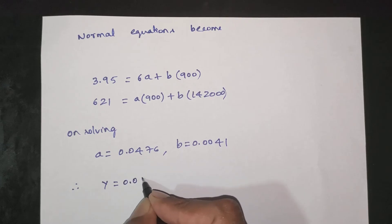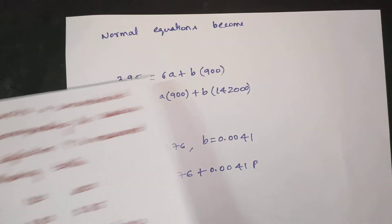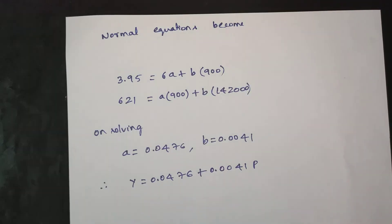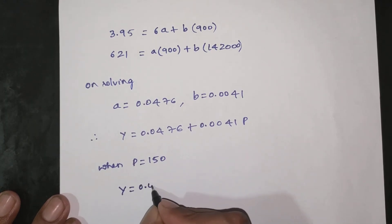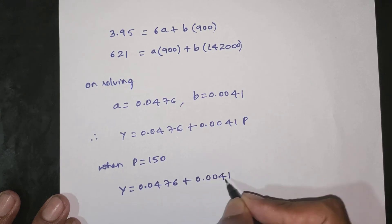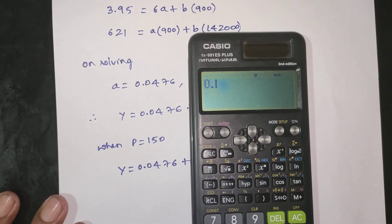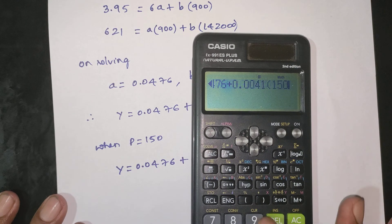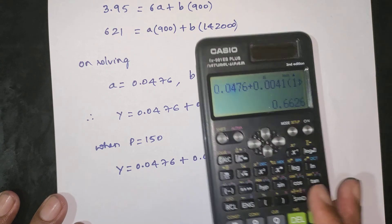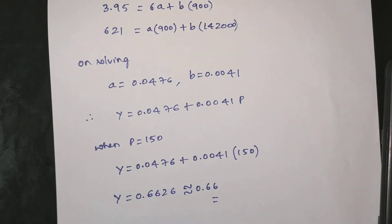Therefore, the law is Y equal to A plus BP, which gives Y equal to 0.0476 plus 0.0041 times P. When P is equal to 150, Y equals 0.0476 plus 0.0041 times 150, giving a final answer of approximately 0.6626, which is approximately equal to 0.663.